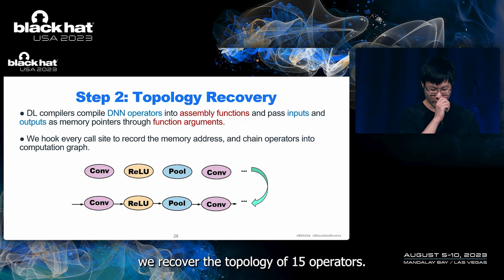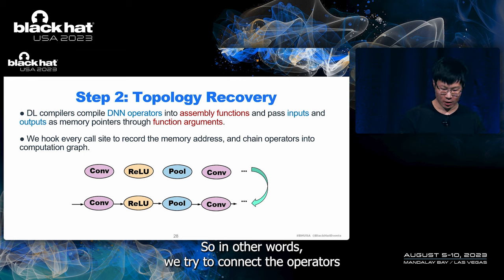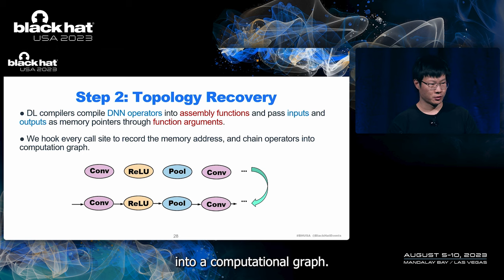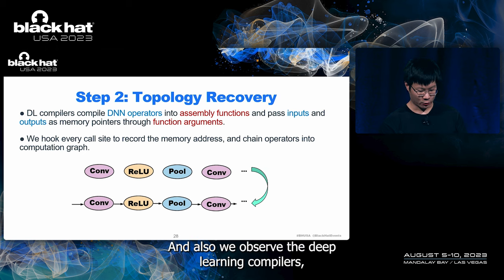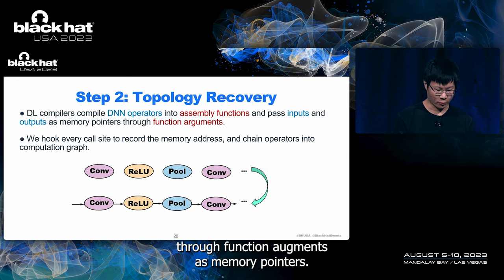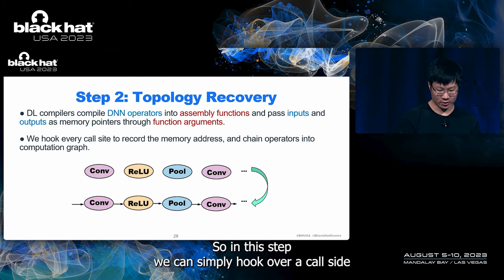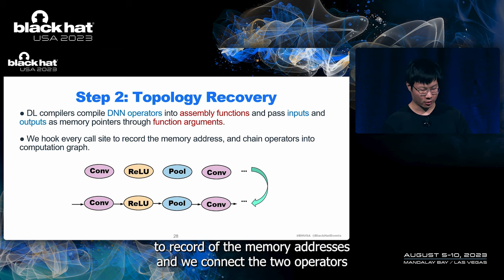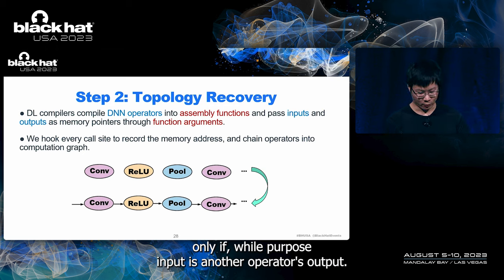In the second step, we recover the topology of the DN operators — in other words, we connect the DN operators into a computational graph. As we observed, deep learning compilers usually compile operators into assembly functions and pass inputs and outputs through function arguments as memory pointers. In this step, we can simply hook every call site to record the memory addresses, and we connect two operators only if one operator's input is another operator's output.